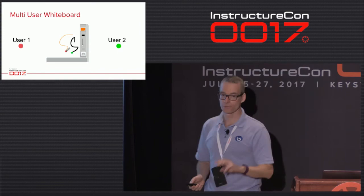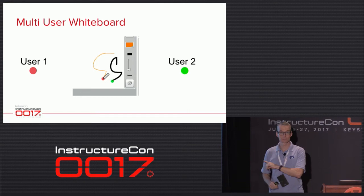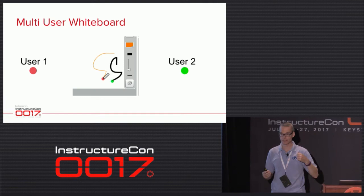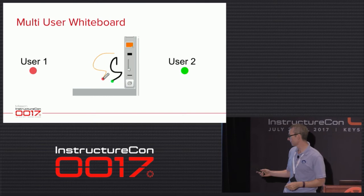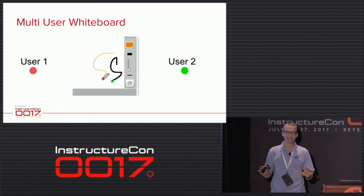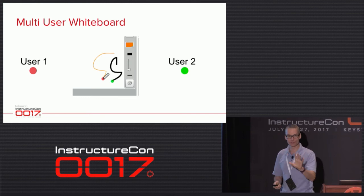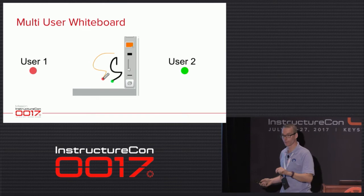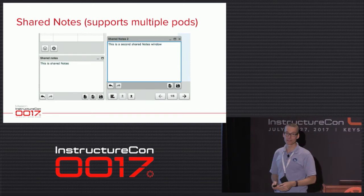For the roadmap — three features this fall, with mobile in parallel. First: multi-user whiteboard. We get this a lot from K-12: I cannot have students sit for an hour just watching me — I need to kinetically and mentally engage them. There'll be a button on the toolbar to turn on multi-user drawing on the whiteboard. Everyone can draw at the same time. The instructor still controls it and can clear it all out.